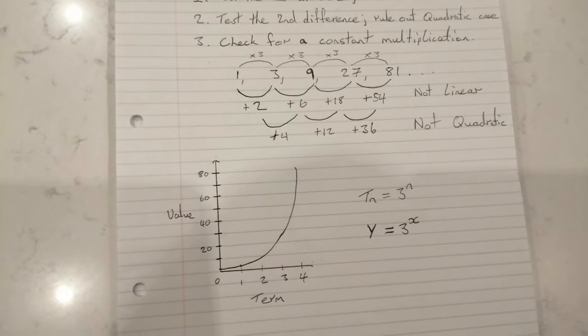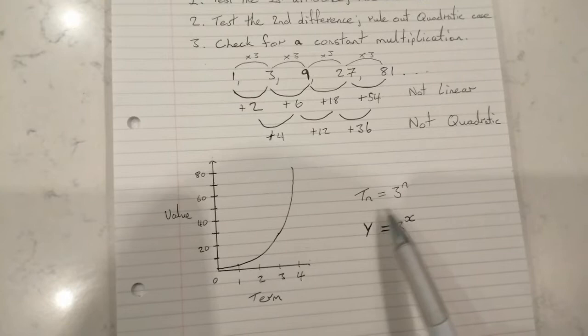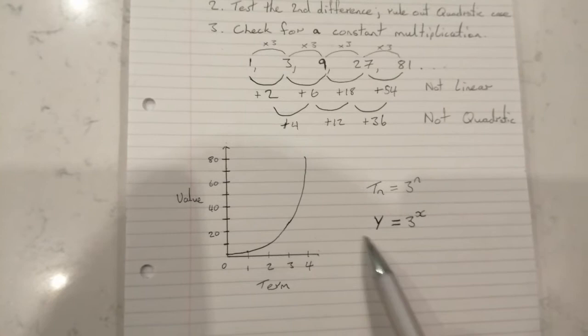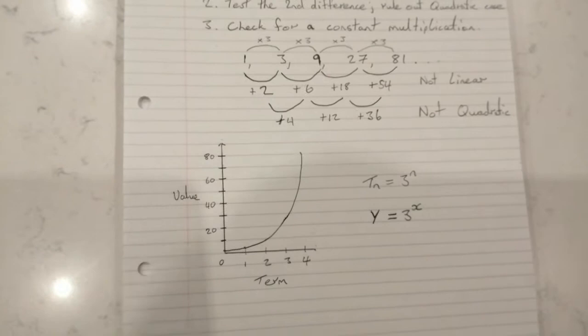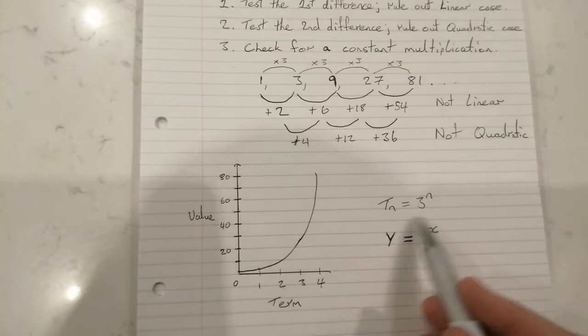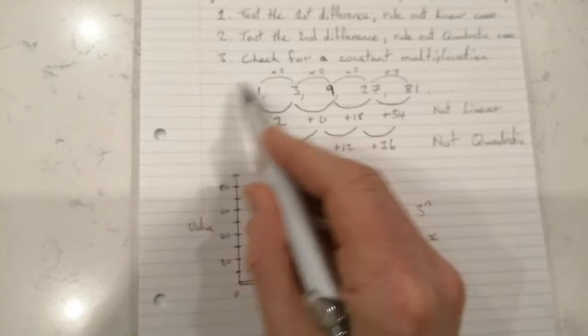We just have to recognize them for junior cert. The only ones you'll ever come across are tn equal to three to the power of n or tn equal to two to the power of n. But as I say, ordinarily we will see them written more like this: y equal to three to the power of x or y equal to two to the power of x.